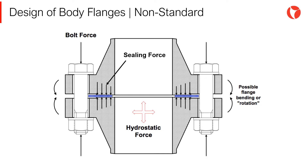In the operating condition, the flange must resist the hydrostatic end force of the internal pressure tending to part the joint, and must maintain sufficient compression on the gasket to assure a tight joint at the design temperature. The minimum load is a function of the design pressure, the gasket material, and the effective contact area to be kept tight under pressure.